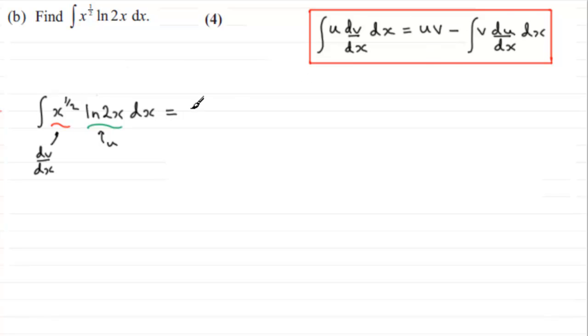First of all, it's going to be equal to u multiplied by v. So u is the natural log of 2x, so just put that down - always put these things in brackets so you don't write ambiguous statements. And then we've got to multiply it by v.